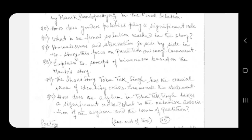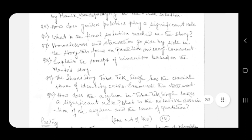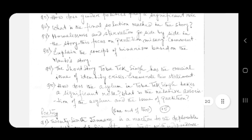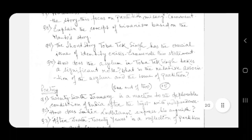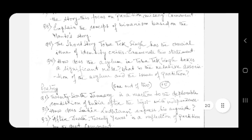Question number ten: how does the asylum in Toba Tek Singh take a significant role? What is the relative association of the asylum and the issue of partition? That ends our short story portion.